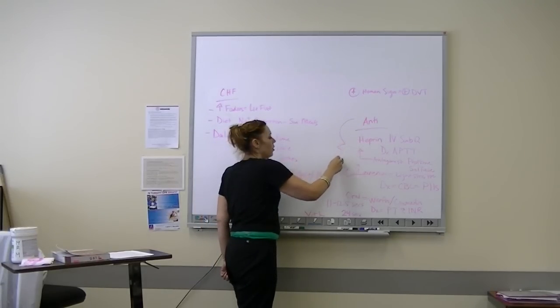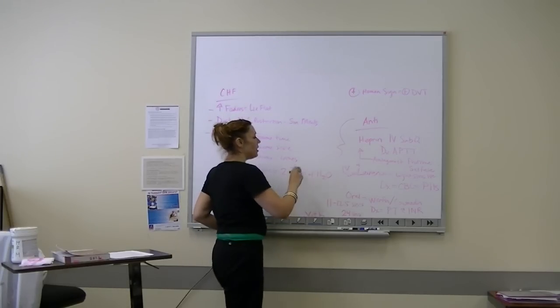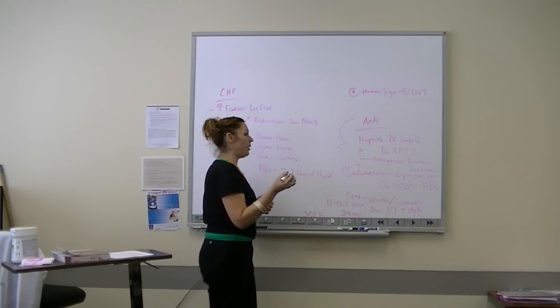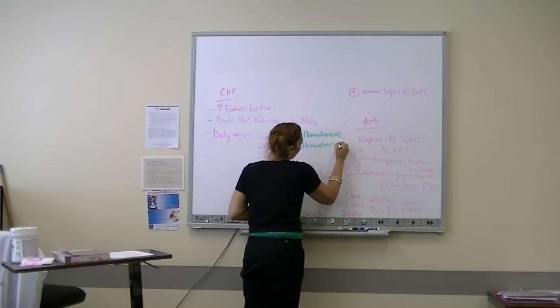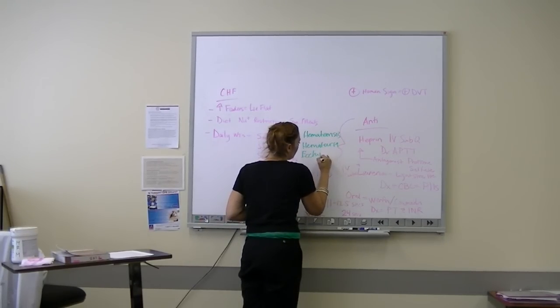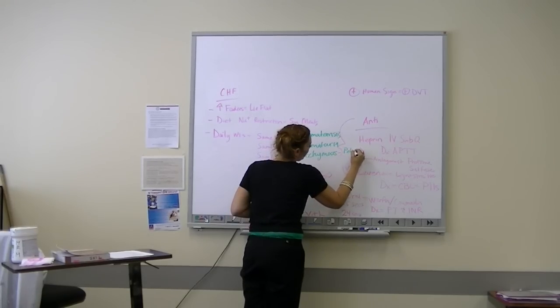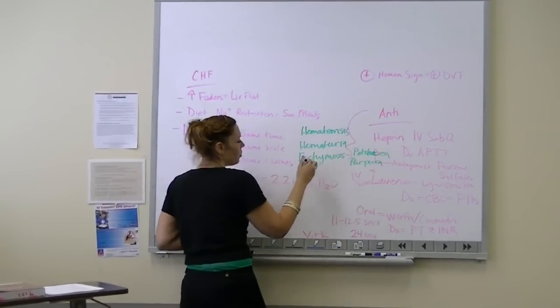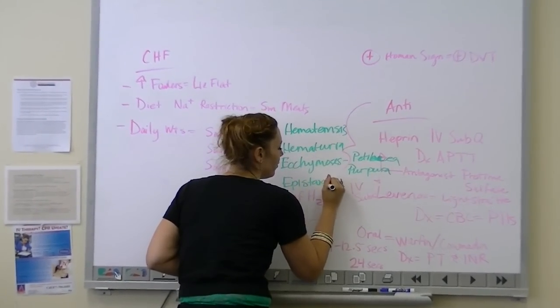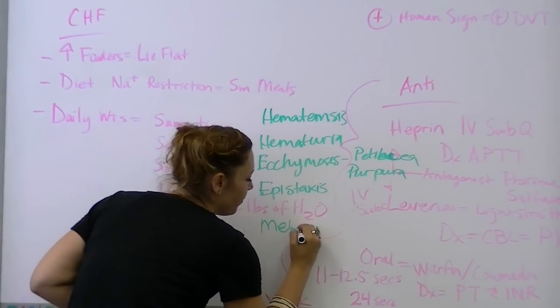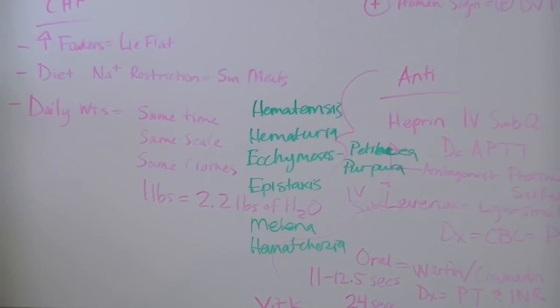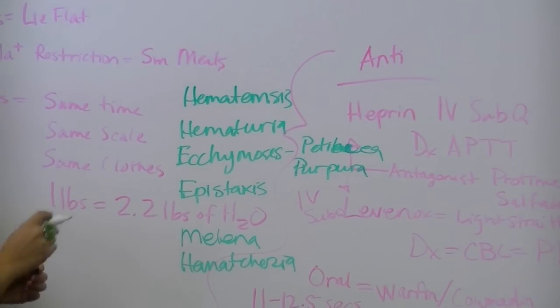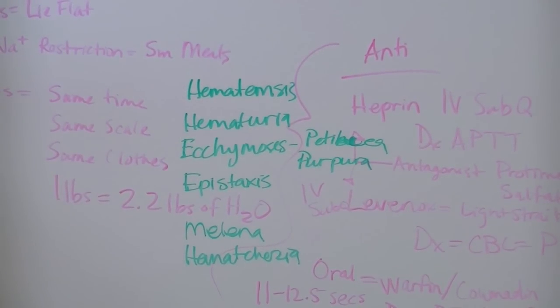When it comes to all three of these, there are some signs and symptoms that they're becoming toxic. They all mean we're bleeding. They all mean we have hematemesis, hematuria, ecchymosis, petechiae, purpura, all forms of bruising, epistaxis. What is melena, hematochezia? All of these mean that we are bleeding. So if we're bleeding, they're toxic. That's what we need to know. And if they're toxic, we use the antagonist.